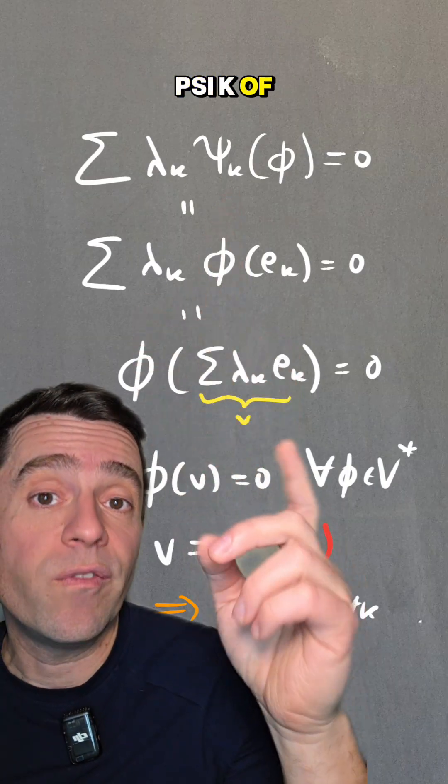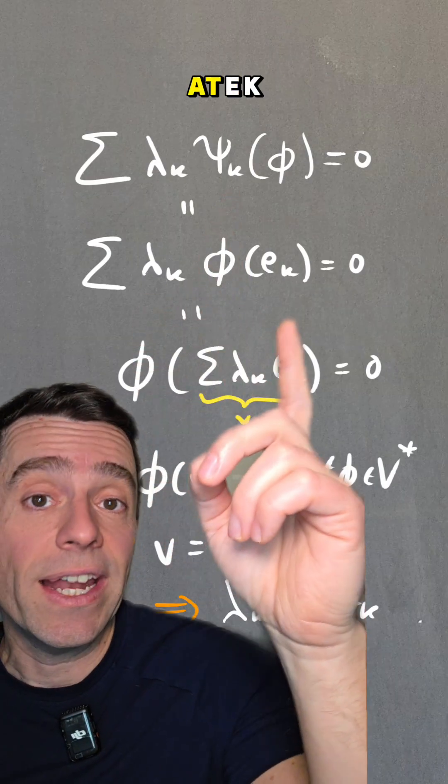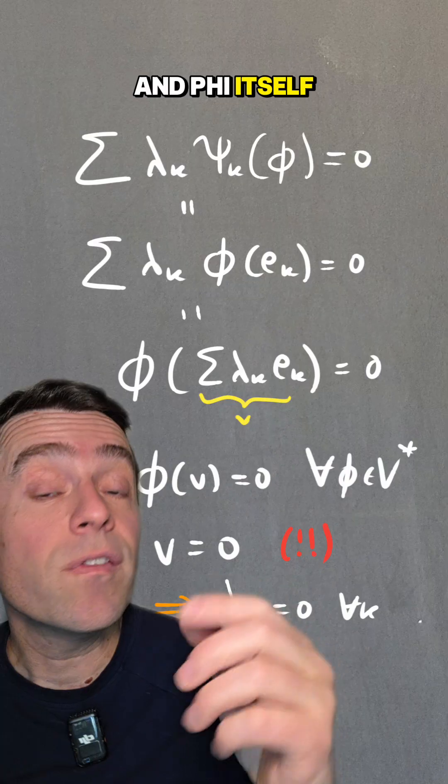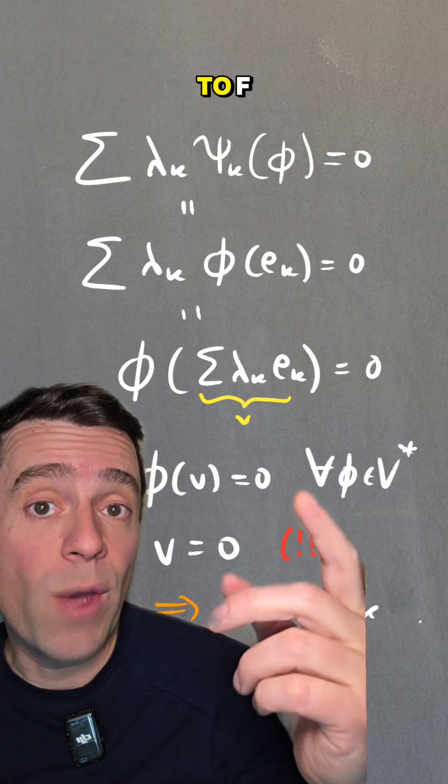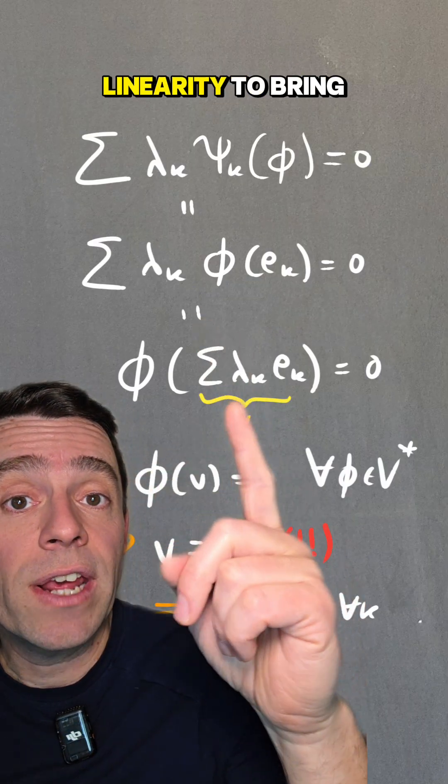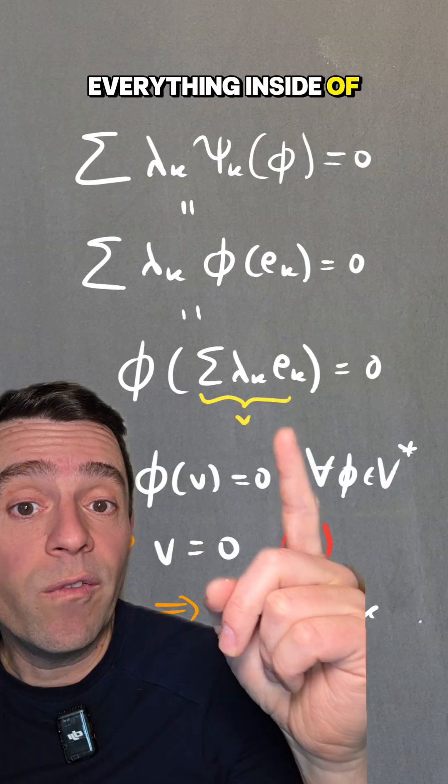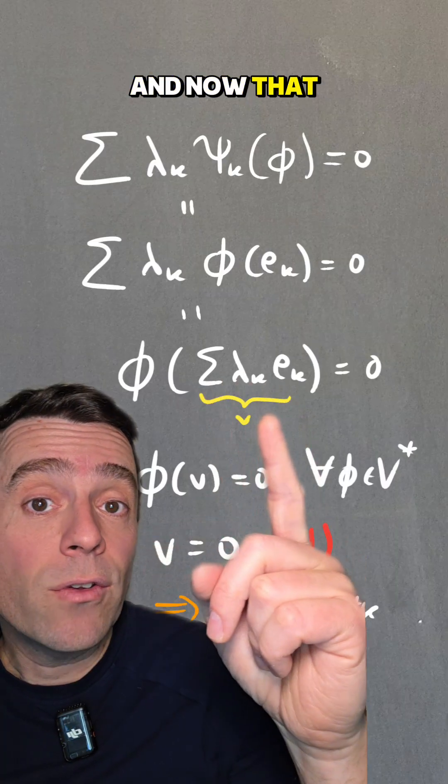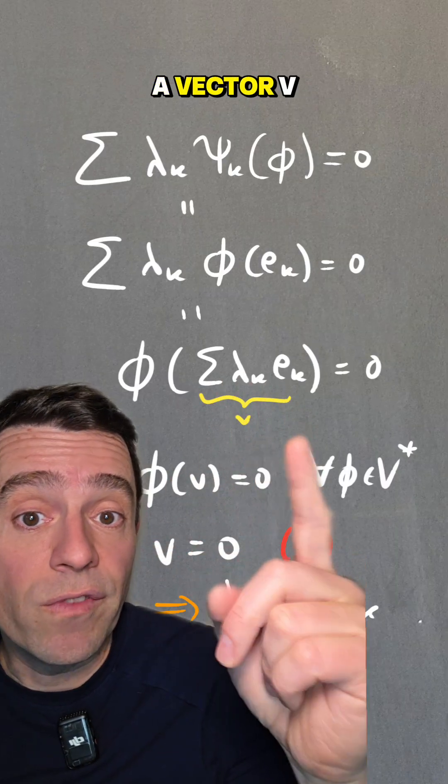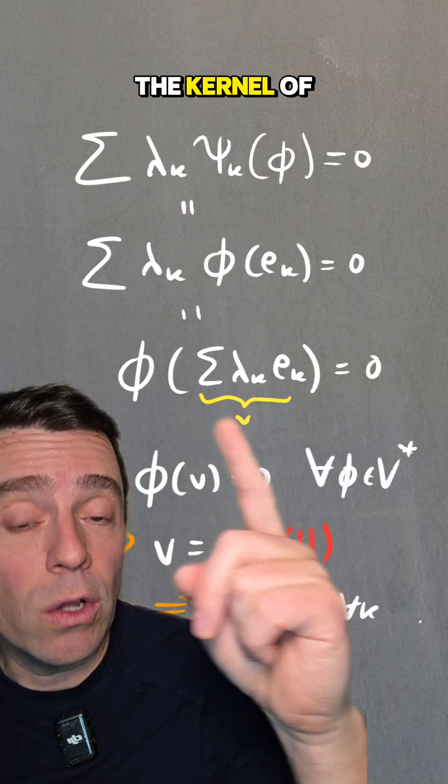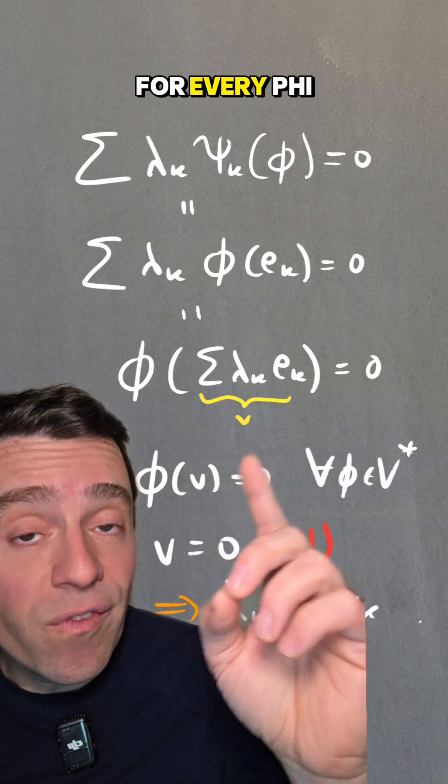then I know what ψ_k of φ does. It evaluates φ at e_k, and φ itself is a linear map from V to F. So I can use linearity to bring everything inside of φ, and now those λ_k e_k is a vector V that is in the kernel of φ for every φ.